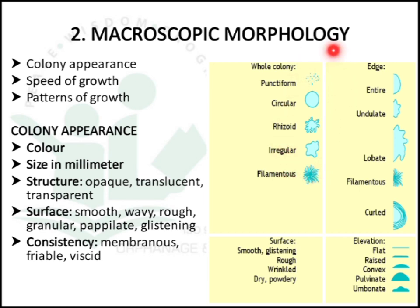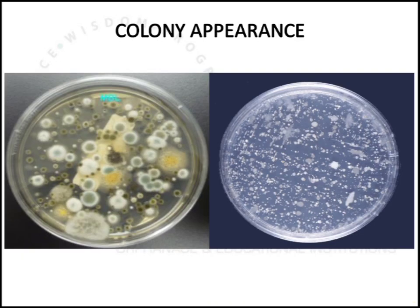Some patterns of colony formation include whole colony, punctiform, circular, zoid, irregular, and filamentous. Based on the edge of the colony, whether it is entire, undulate, lobate, filamentous, or curved. These are some identification methods based on macroscopic morphology — the observation of colony formation after incubation.